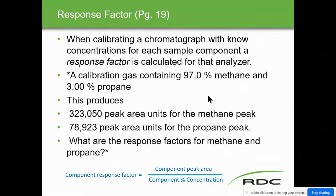The component response factor formula is not on the formula sheet, so write it down: component response factor = component peak area ÷ concentration of the component. For methane: 323,050 ÷ 97% = 3,330.41. For propane: 78,923 ÷ 3% = 26,307.67. These response factors are unique to each individual analyzer because every analyzer responds differently to each component.